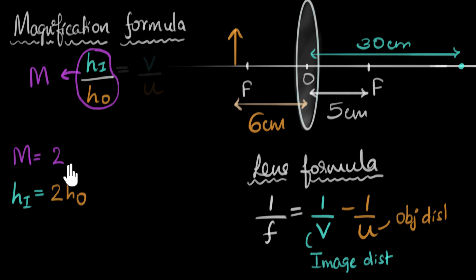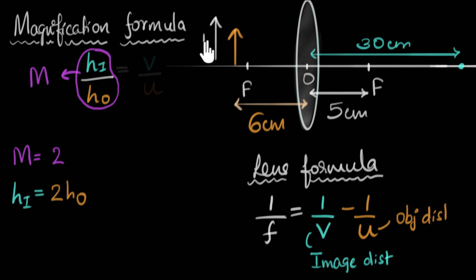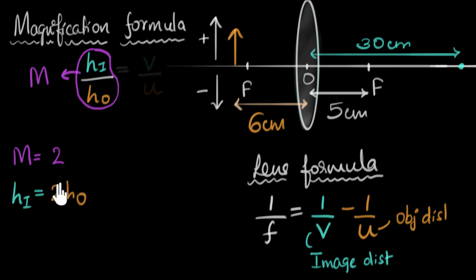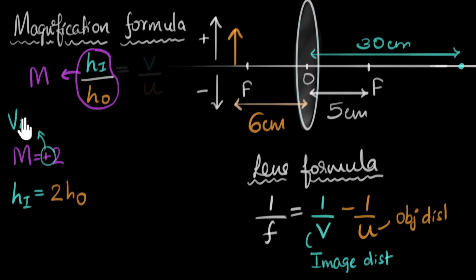This magnification number can also tell us whether we're dealing with a real image or a virtual image — all you have to do is look at the sign. Heights above the principal axis are positive, and anything below the principal axis is negative. In our example, the magnification is a positive number, meaning the height of the image and the height of the object have the same signs — they're both above or both below the principal axis. So they have the same orientation; the image is erect. Erect images are always virtual images, so a positive magnification immediately tells us this is a virtual image.